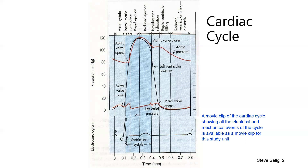When the aortic valve closes, the mitral valve is still closed at that point and we have what's called isovolumetric relaxation — the ventricle relaxes with both inflow and outflow valves closed. Then when the left ventricular pressure falls enough, the mitral valve is forced open and there is rapid ventricular filling, followed by reduced ventricular filling, or diastasis, in the latter part of diastole.